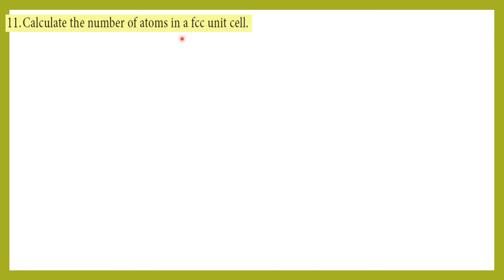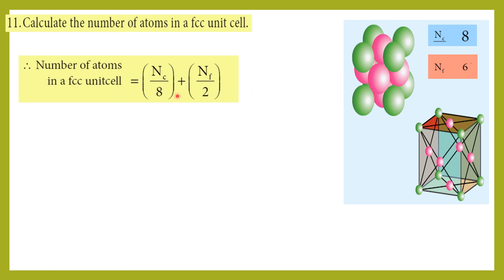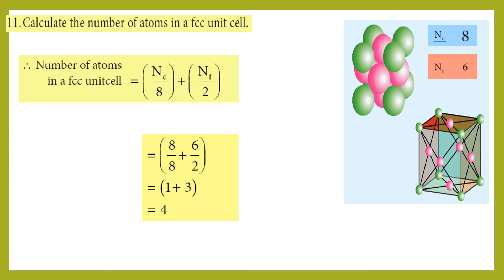Question: calculate the number of atoms in a face-centered cubic (FCC) unit cell. In an FCC unit cell: 8 corner atoms each shared by 8 unit cells = 8/8 = 1, and 6 face-center atoms each shared by 2 unit cells = 6/2 = 3. Total n = 1 + 3 = 4 atoms. For a body-centered cubic (BCC) unit cell: 8/8 + 1/1 = 1 + 1 = 2 atoms.